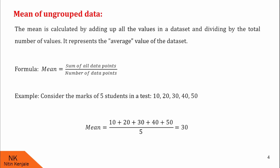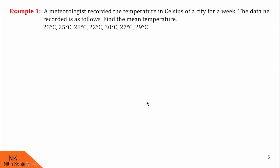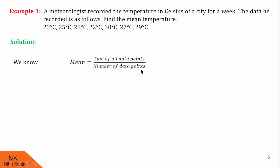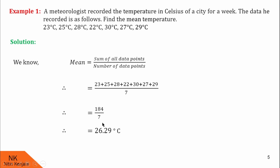Now let us see some more examples. In this first example, a meteorologist recorded the temperature in Celsius of a city for a week. We are asked to find the mean of the temperature. This data is recorded for 7 days, so there are 7 data points. The denominator is 7. In the numerator, we add up all the data. After simplifying, mean is equal to 184 divided by 7, which is 26.29. Therefore, the mean temperature of the week is 26.29 degrees Celsius.